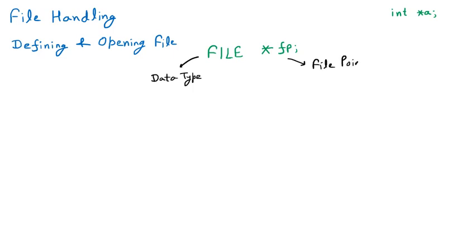There are things already defined in the system. First of all we create the file pointer, and afterward with the help of this file pointer we can perform all operations like opening the file, closing the file, reading the file, and writing the file. This is how we define the file. Now to open the file we use this file pointer — the syntax is: the file pointer fp is equal to the function used for opening the file.